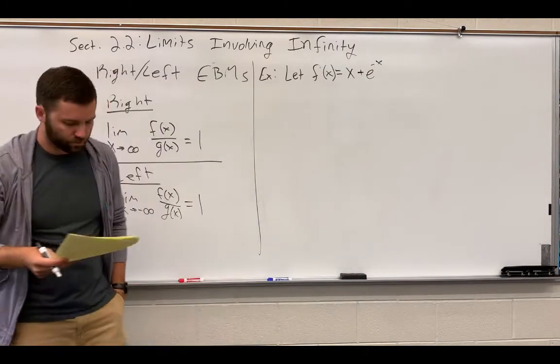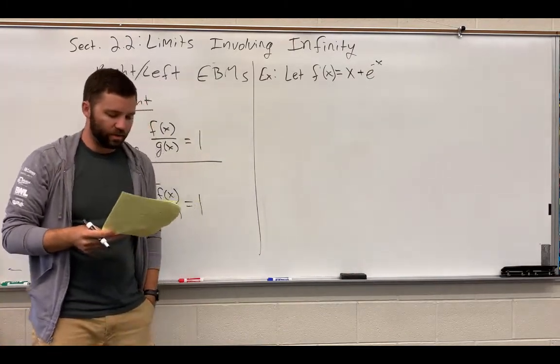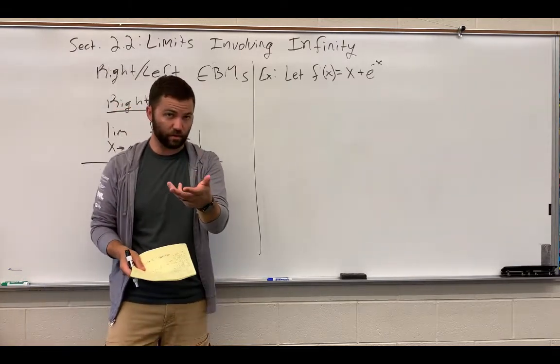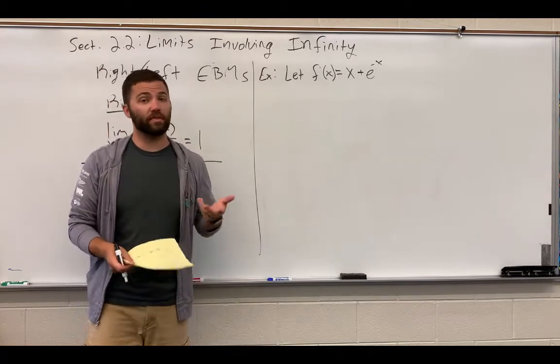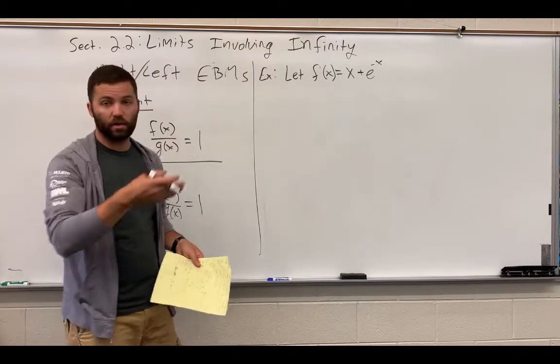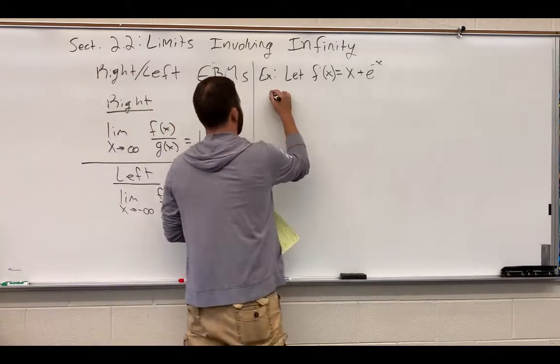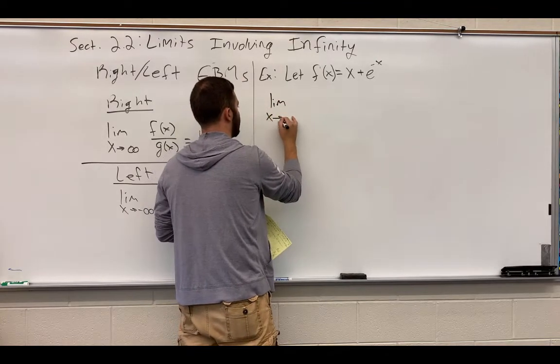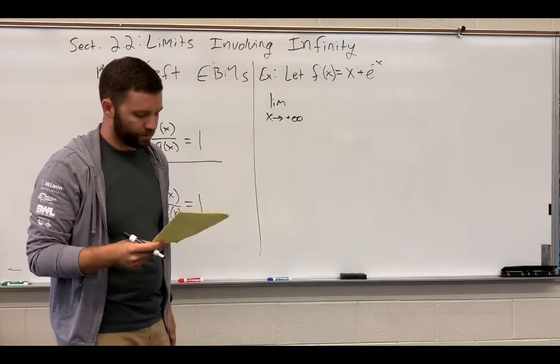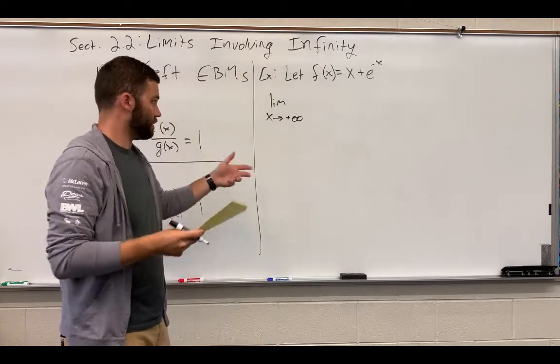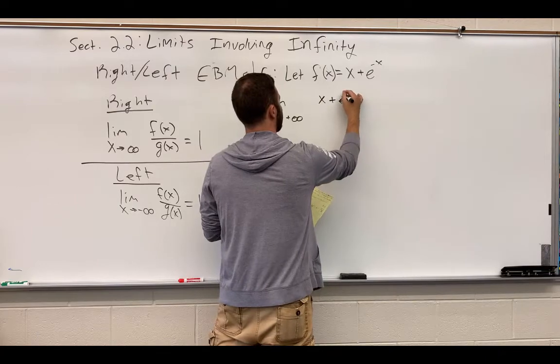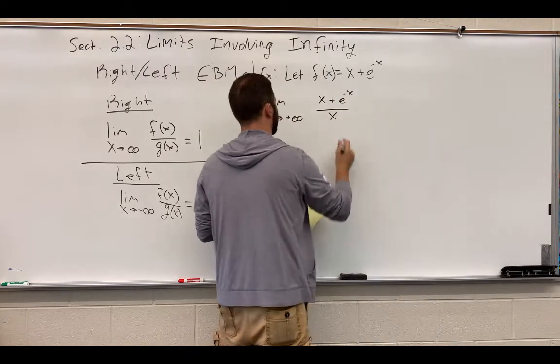We want to figure out what the right end-behavior model is. I'm going to hypothesize that based on looking at the graph, which you should have in front of you, the end-behavior model is going to be x, y equals x, because it looks like sort of a straight line going off to the right. Let's verify that. We take the limit as x approaches positive infinity. Quite often we won't put the plus there, but just to make it explicit that's what we're checking. We'll take x plus e to the negative x divided by x.